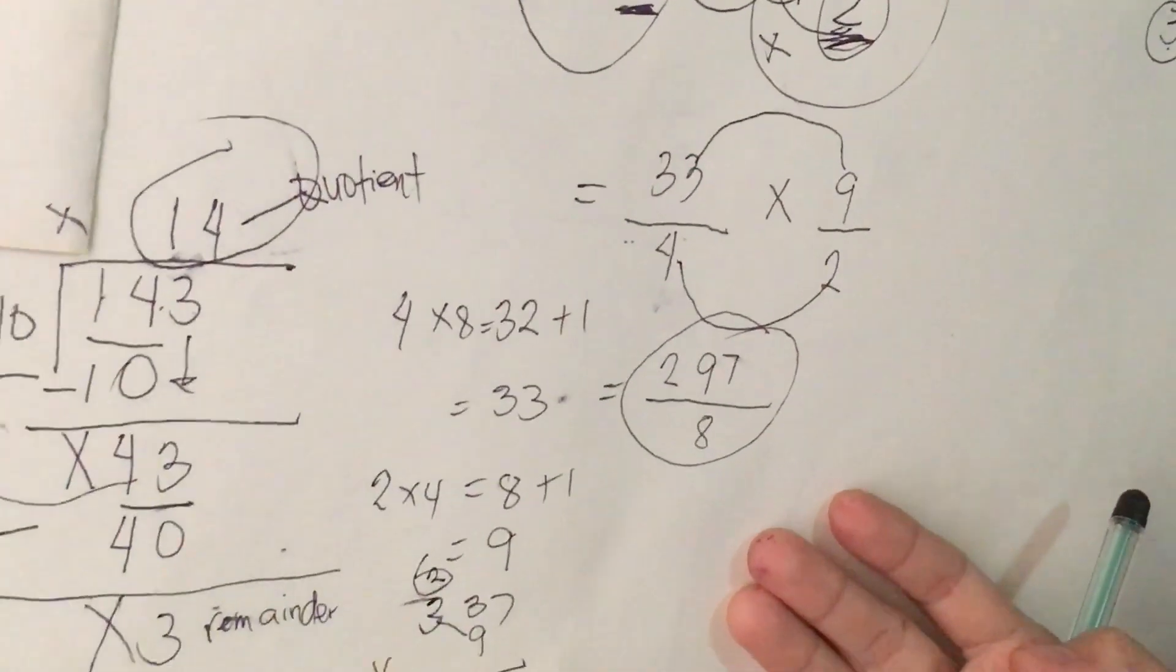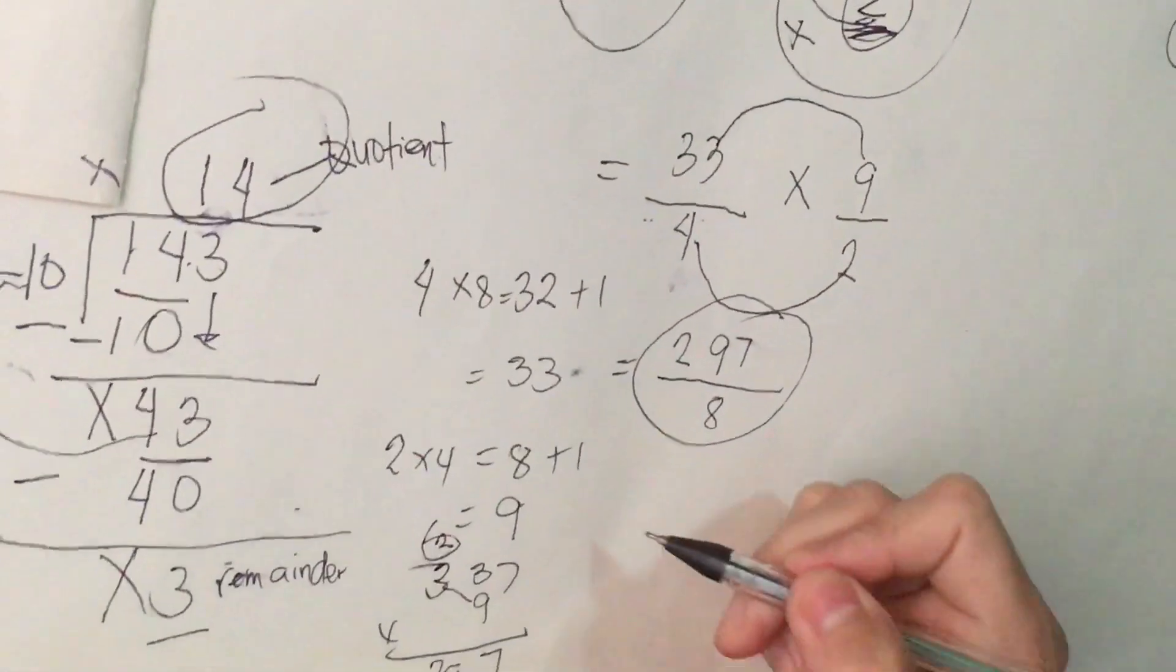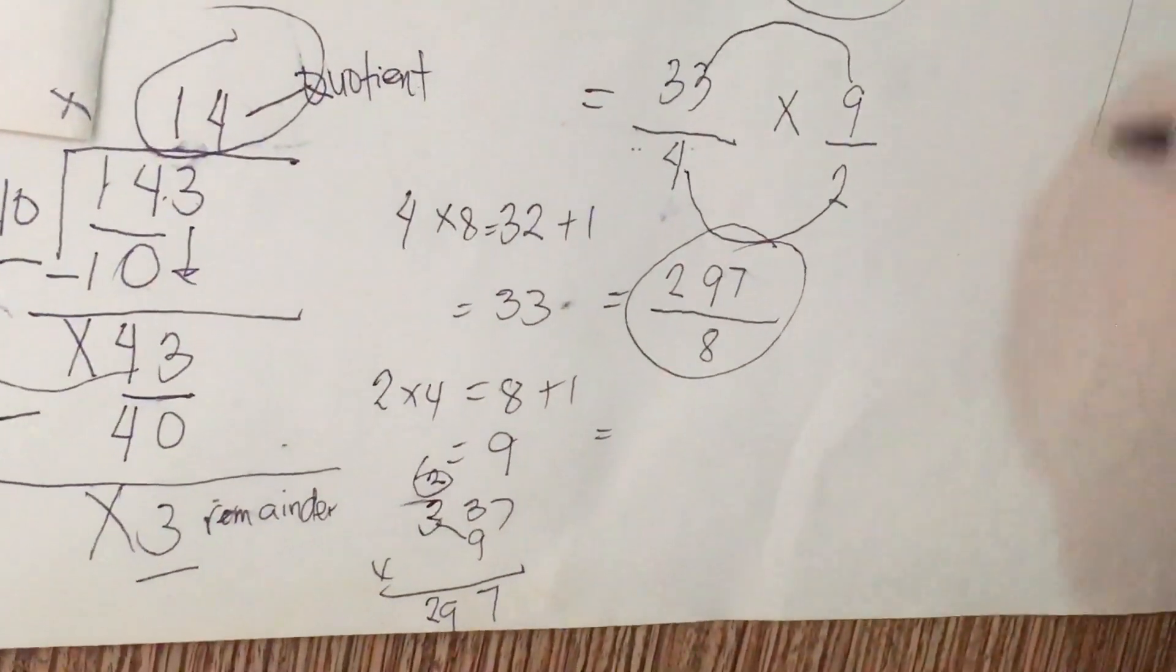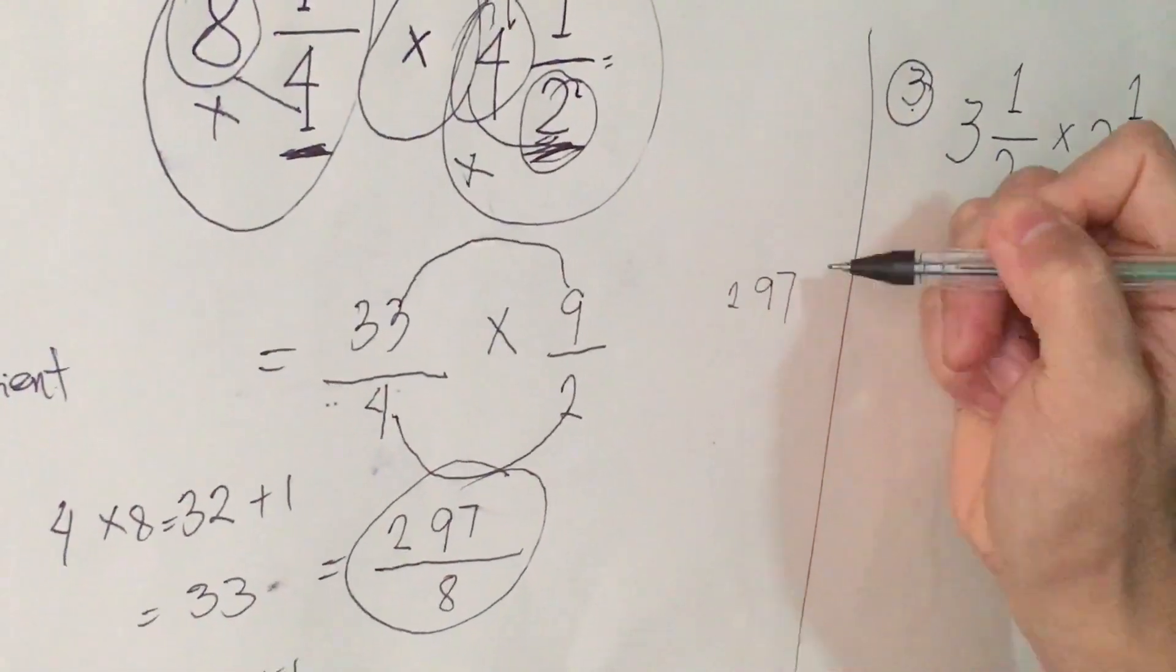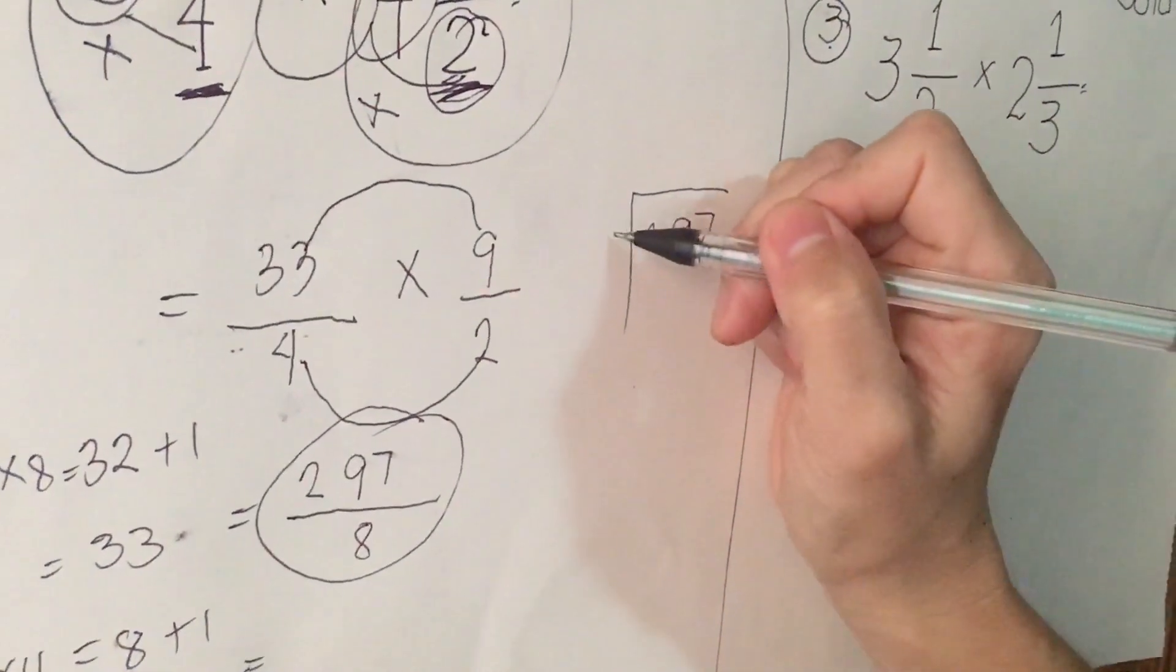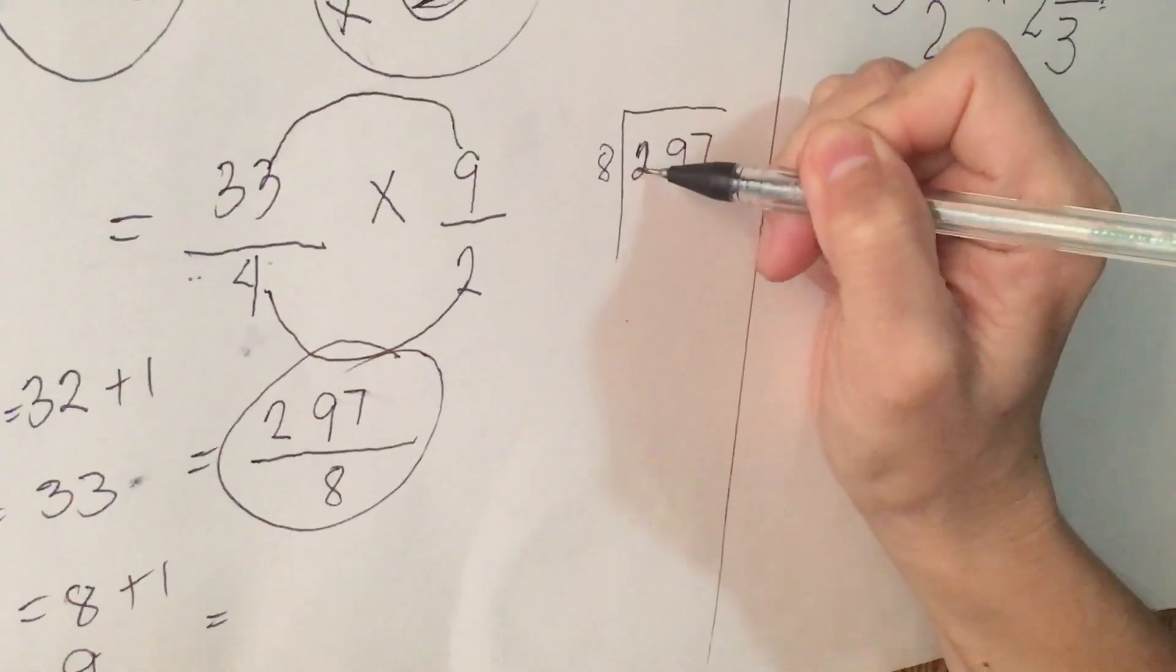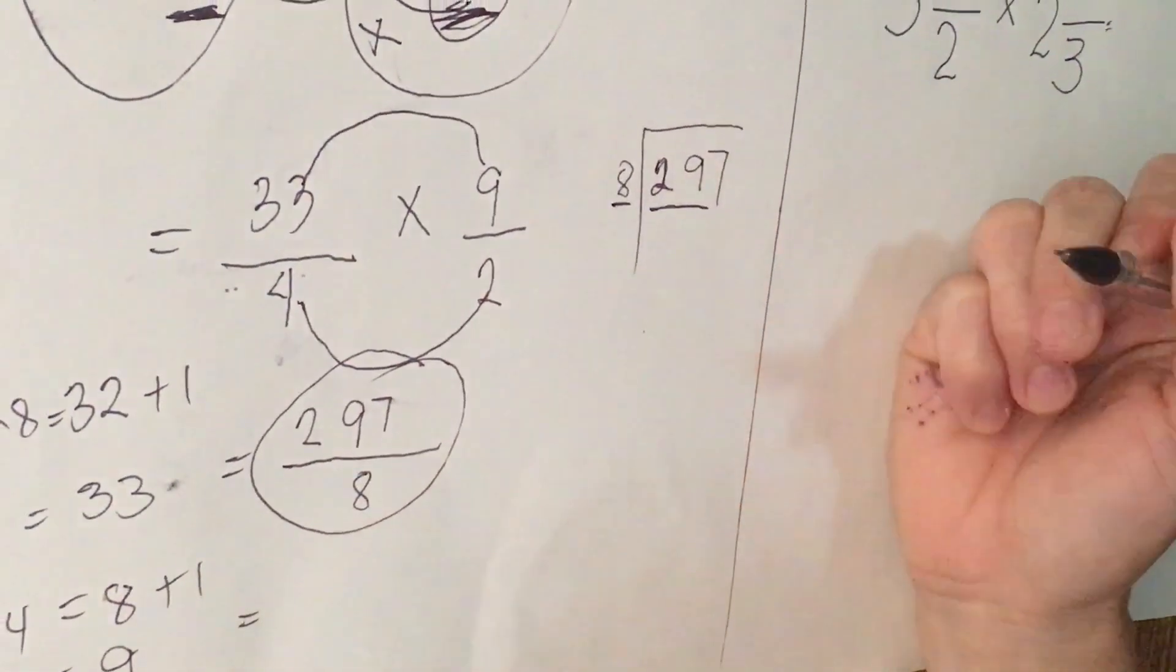Actually, we're not sure that because we're going to simplify this one. It is improper fraction. So we're going to write here, this side, we have 297, our dividend. Our divisor is 8. This is number 2. We are going to divide 29 to 8.